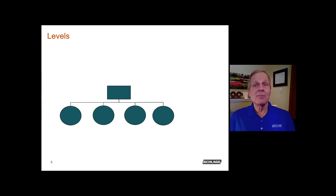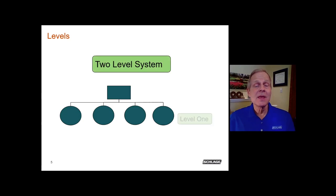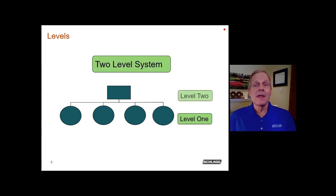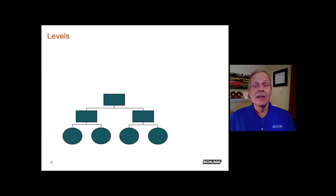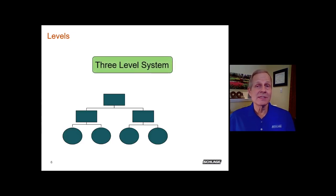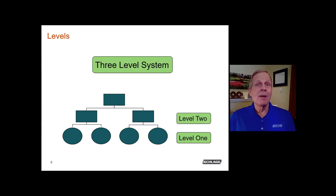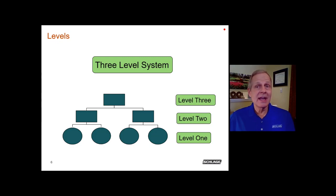In a simple two-level system, the keys at the base are labeled as part of level one, and above that is level two. In a three-level system, we start at the base — level one — then level two above that, and level three at the top. That layout is straightforward and not too complicated.